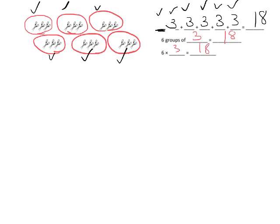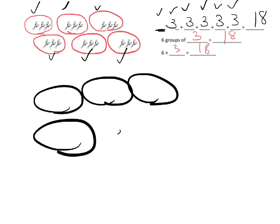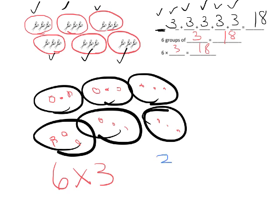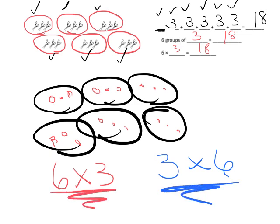Now here's the big deal. In the United States, when we see these six groups — 1, 2, 3, 4, 5, 6 — and there's three inside each group, it's customary to say six groups of three. However, there are a lot of other countries that think of it differently — they say it's three six times, and so they'll write it as three times six.